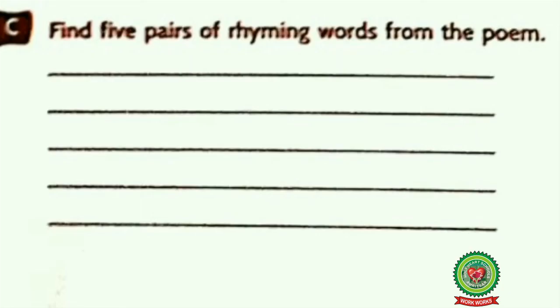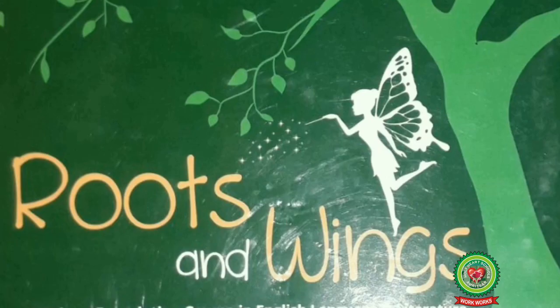C: Find 5 pairs of rhyming words from the poem. Rhyming words are the repetition of similar sounds — for example, low and blow, tree and free. Find the 5 pairs of rhyming words from the poem and write them. I hope you have understood the poem. Revise it thoroughly. Thank you.